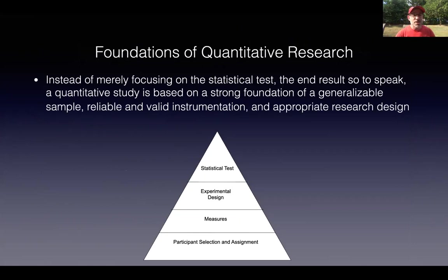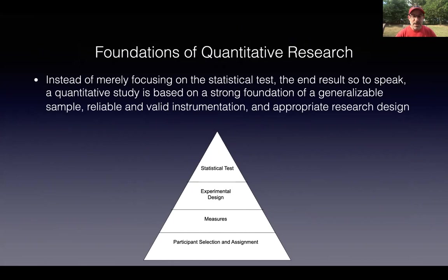When we're doing quantitative research, remember that generalizability is so much more than having an adequate sample. You have to have valid and reliable measures. You have to have a design that truly measures what you're wanting to measure. And then you have the test that explicates the findings. But notice that the statistical test really means nothing without a strong design, a valid measure with reliable scores, and a process of obtaining the appropriate participants. I hope that helps in understanding a little bit about generalizability.